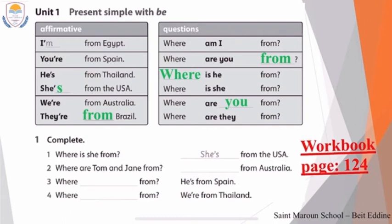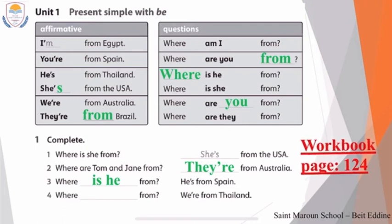Now let's complete number one: Where is she from? She's from the USA. Number two: Where are Tom and Jane from? They're from Australia. Number three: the answer is he's from Spain, so the question must be where is he from? We use 'be' first, then the personal pronoun — 'is,' then 'he.' Number four: We're from Thailand. The question is where are we from? Or where are you from? — they will answer we're from Thailand. You can use both 'you' or 'we.'